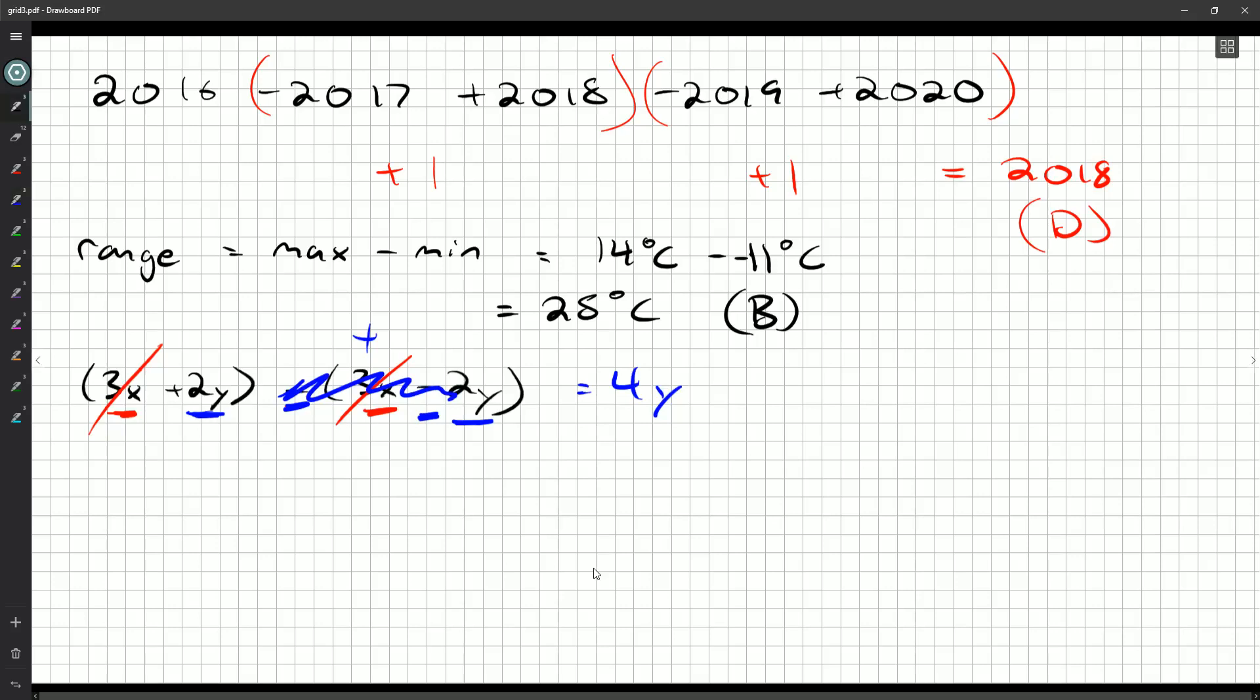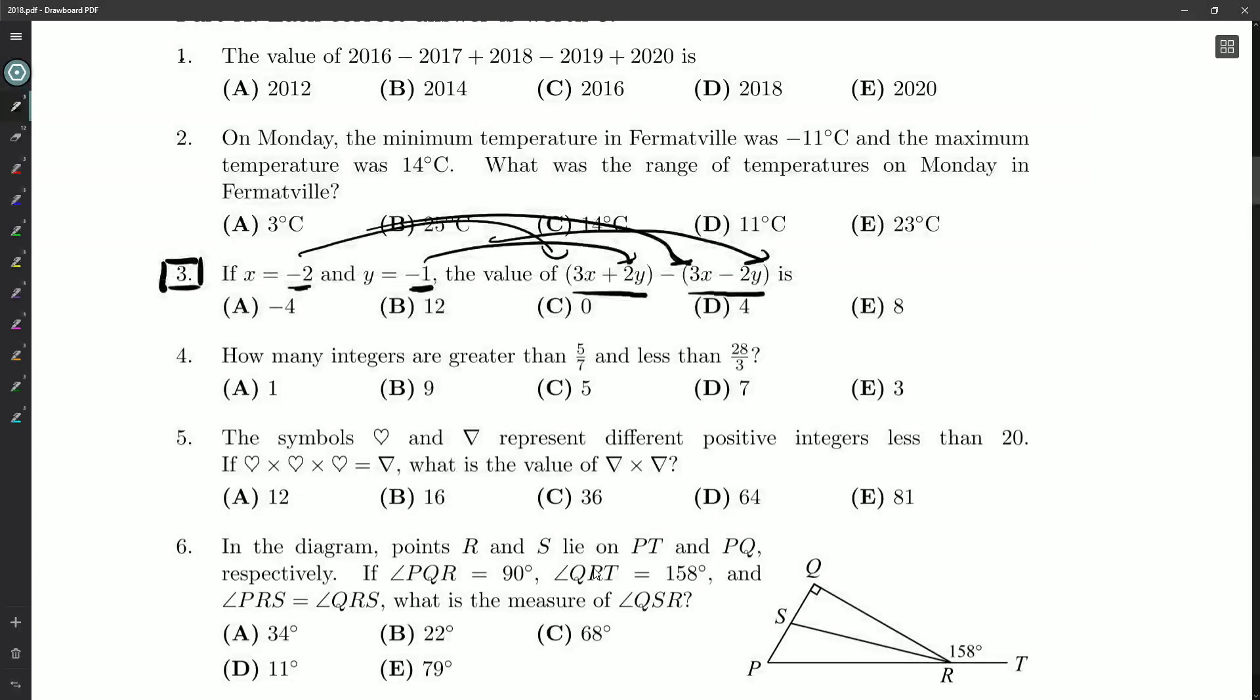But y was equal to negative 1. So 4 times negative 1, we're looking for an answer of negative 4. And that's going to be A, our very first answer there.